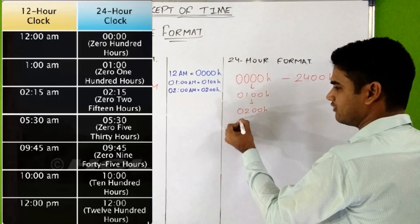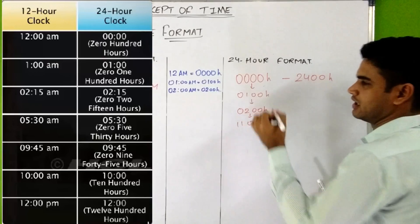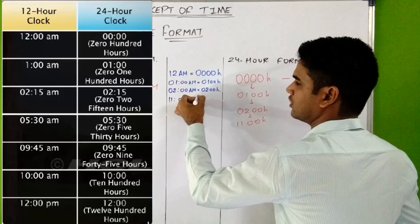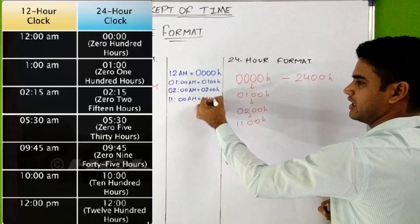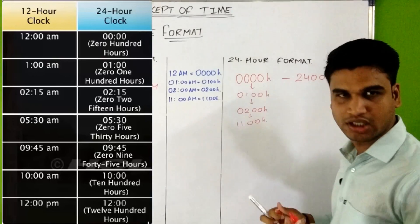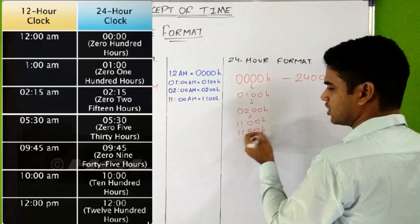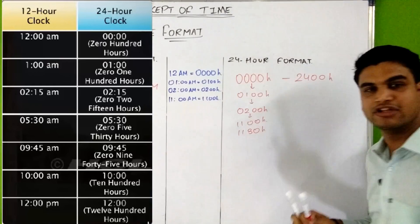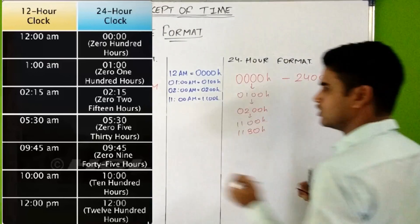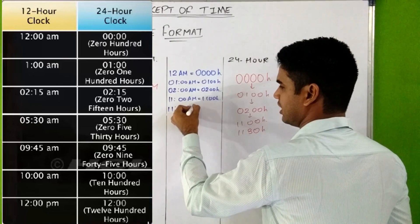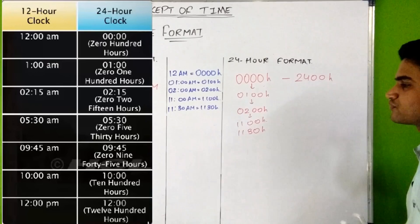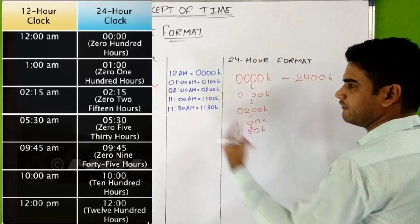Similarly, if it is 11:30 AM, then it will be written as 1130 hours, read as 'eleven thirty hours'. So we can say that 11:30 AM is written as 1130 hours in 24-hour format.